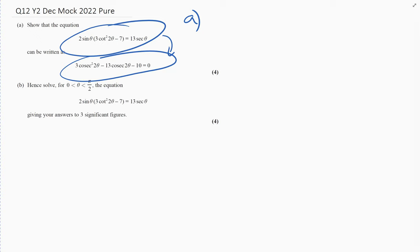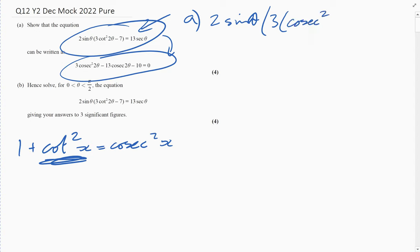If we start with the whole of this equation, we've got 2 sine theta and then that cot squared. You should know that 1 plus cot squared equals cosec squared - you just need to know that. Similar with 1 plus tan squared is sec squared, sine squared plus cos squared equals 1. So cot squared is cosec squared minus 1. Let's replace that with cosec squared 2 theta minus 1, and we've still got that minus 7 and it still equals 13 sec theta.